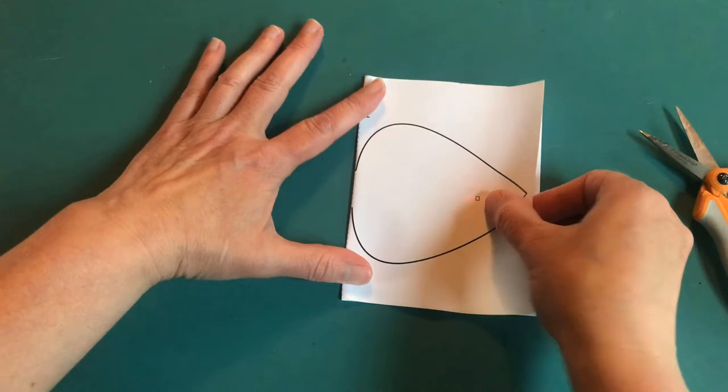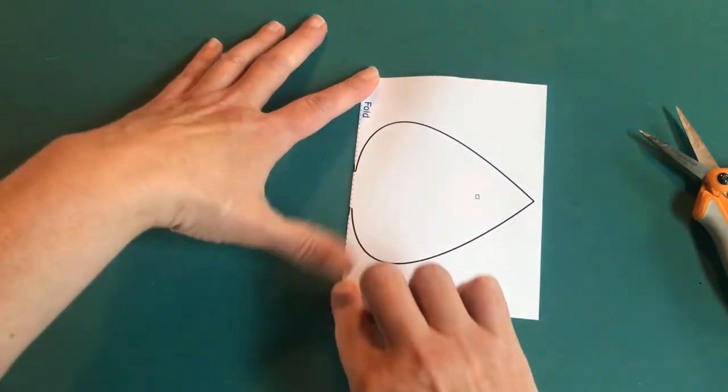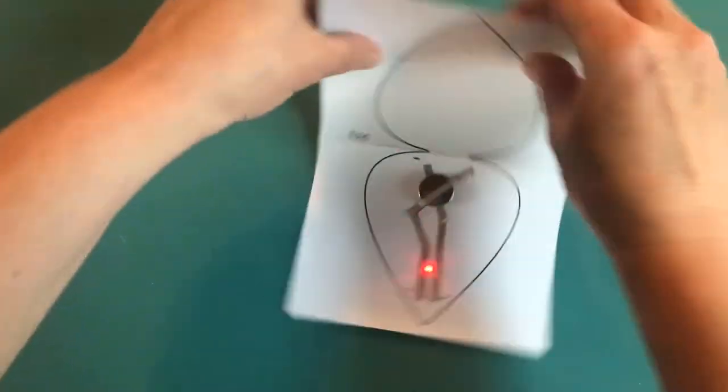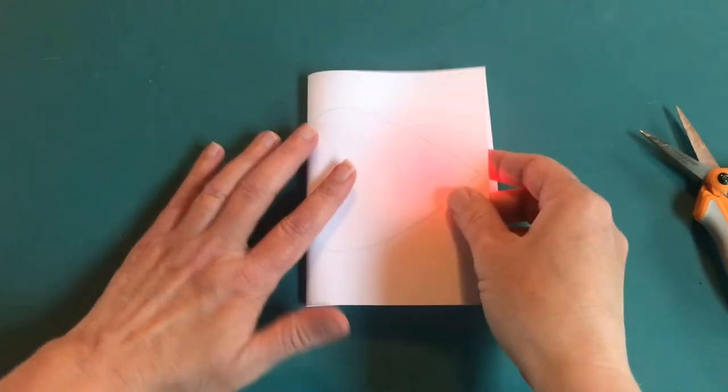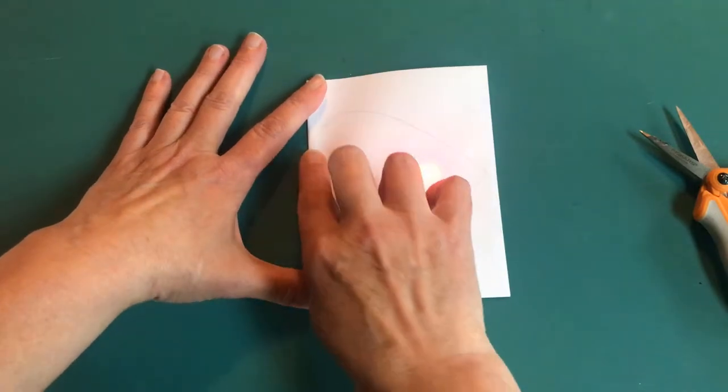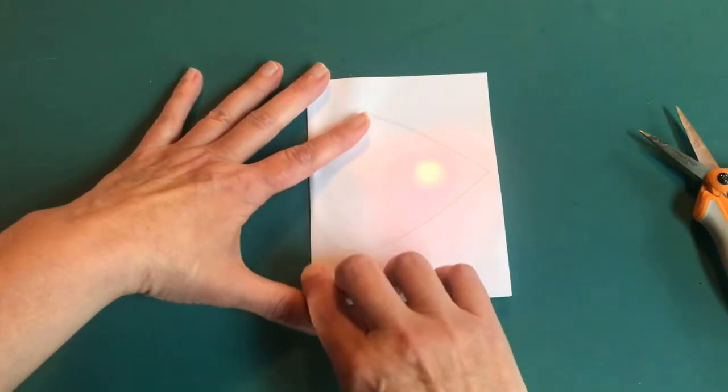Once you've got your circuit working the way you want it, you can fold your template in half along the dotted lines. Sometimes I like to fold it before I lay the circuit down. It doesn't really matter what order you do it in. In this example, I folded it after I did my circuit.